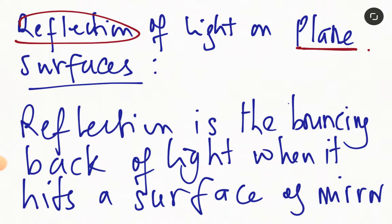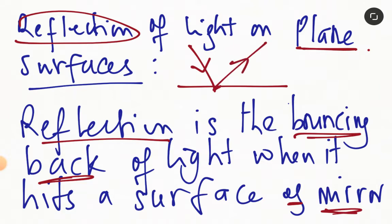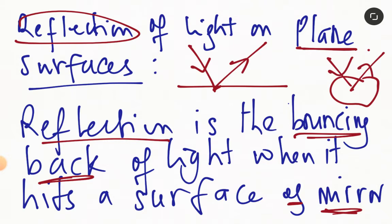First let's take the definition of reflection. Reflection is the bouncing back of light when it hits a surface. An example is a mirror. If we have a mirror and light falls on it and bounces back, then we say reflection has occurred. It can also be on a piece of stone — if light falls on a stone and bounces back, we say we have reflection.